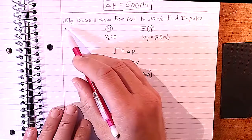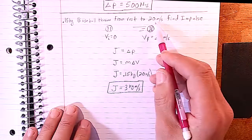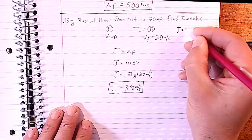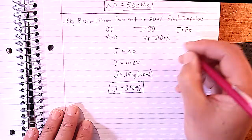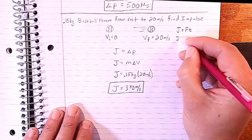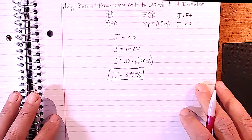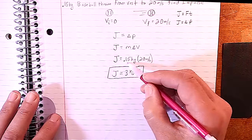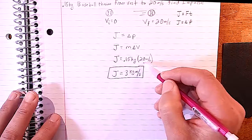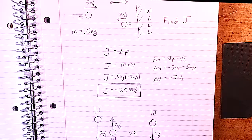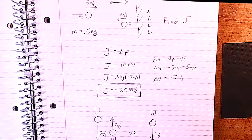Here's the opposite version: a 0.15 kilogram baseball is thrown from rest to 20 meters per second — find the impulse. We might be tricked into using J equals FT, but they gave us M and delta V. Since J equals delta P, J equals M delta V: the mass is 0.15 kg and the velocity changes from 0 to 20, giving 3 kilogram meters per second. Because impulse and change in momentum are vectors, we must be careful about direction, especially with bouncing objects.